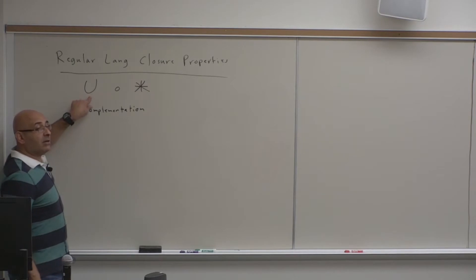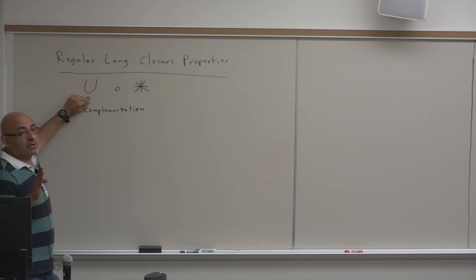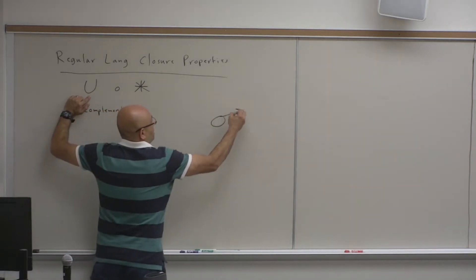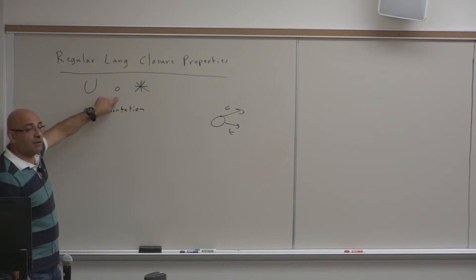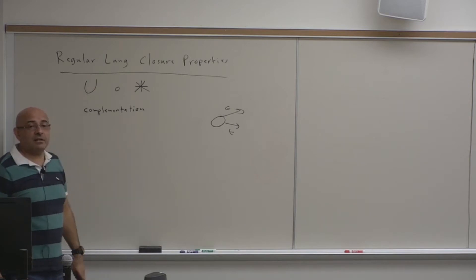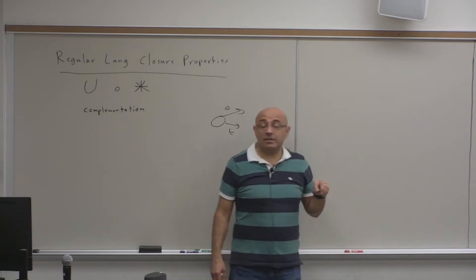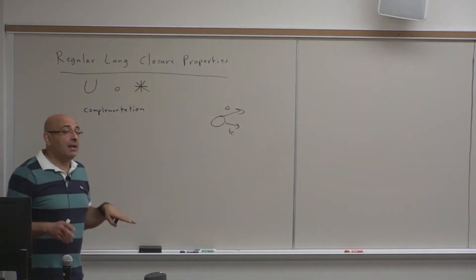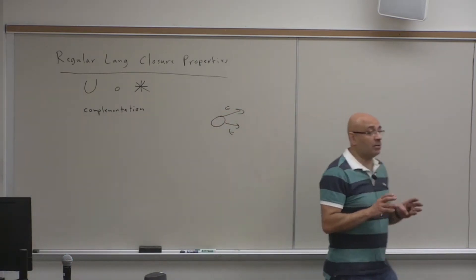We showed that regular languages are closed under union by showing that if you give me an NFA for language one and an NFA for language two, I can always construct an NFA for the union using epsilon transitions. We did the same for concatenation and for star. Now, how did we show that we can construct an NFA or a DFA for the complement? If I give you an NFA for a language, can you construct an NFA for the complement, or is it the DFA that you can construct?